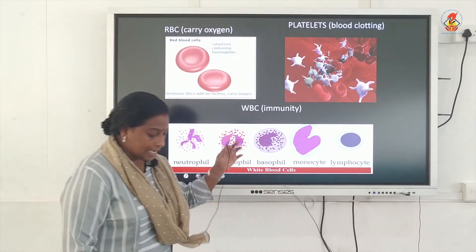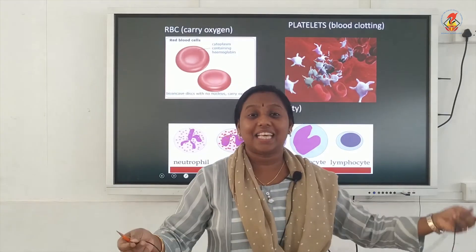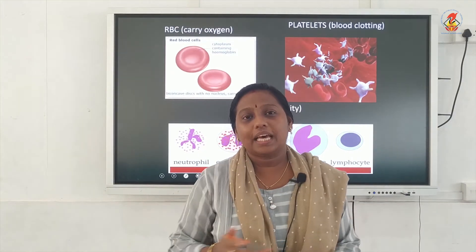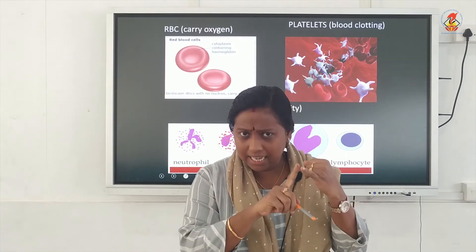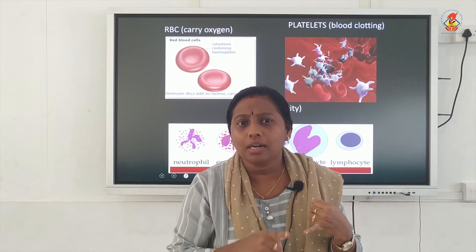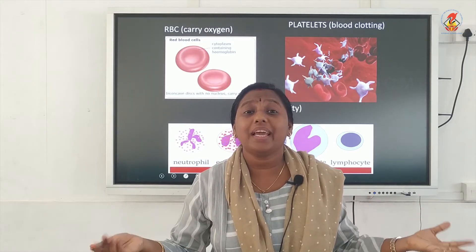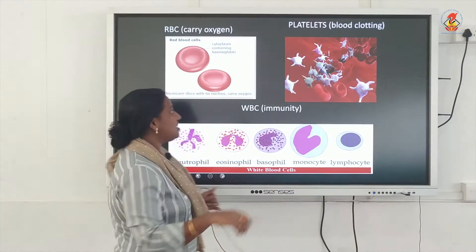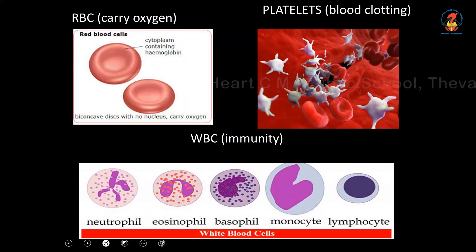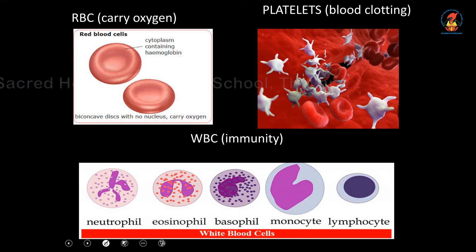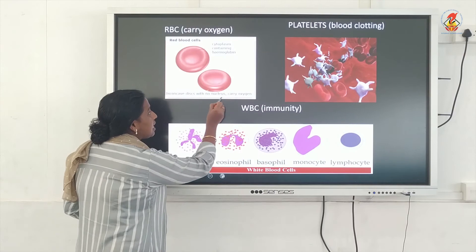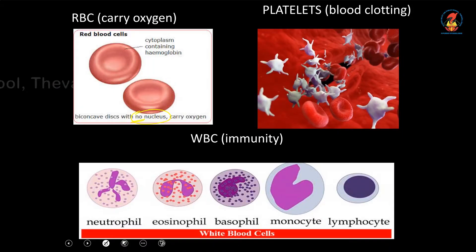Now we are going to study in detail about the blood cells. As we have seen, there are three different types: RBC, WBC, and platelets. First, RBC — looking at this diagram, this is the shape of an RBC. It is disc-like and biconcave in nature. There is a speciality for RBC: it has no nucleus. Why? Because if there is a nucleus, it will take up space inside the RBC.